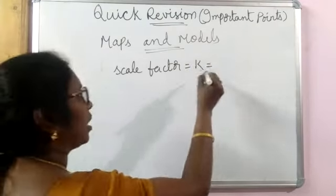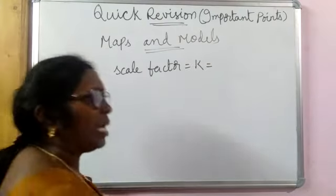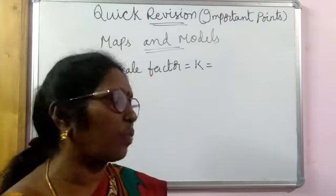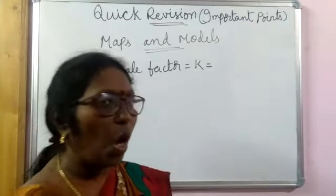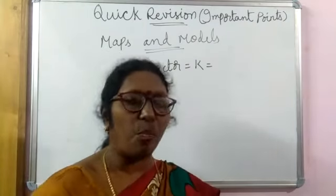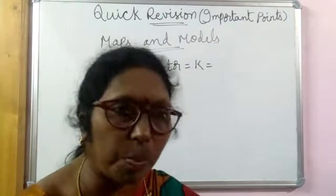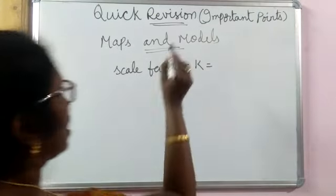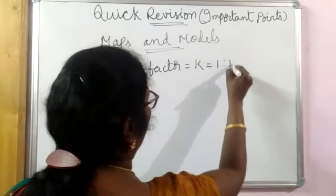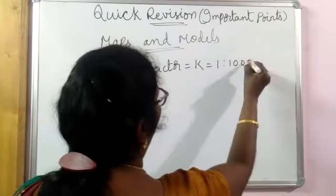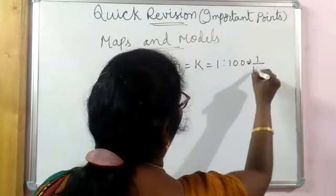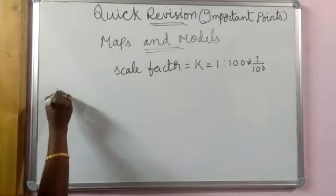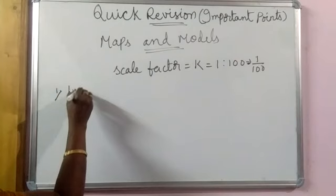It may be 1 is to 200, it may be 1 is to 500, or 1 is to 1000. Always, maps will be smaller and actual objects will be bigger, yes or no? So mostly, if you take 1 is to 100, the value of K will be 1 by 100. One example I gave you - remember, very easy.